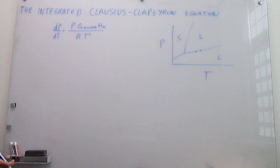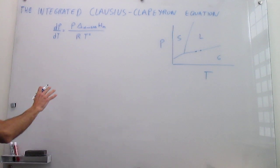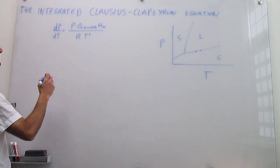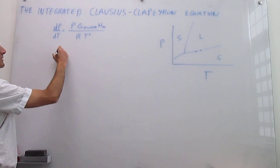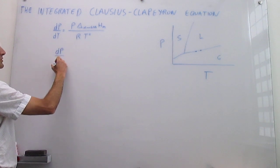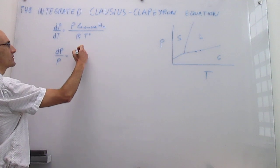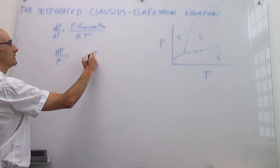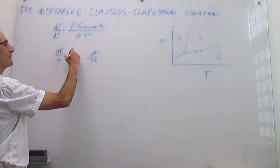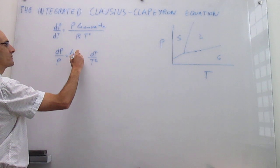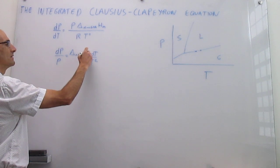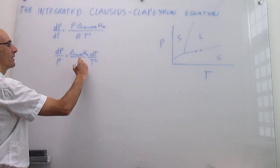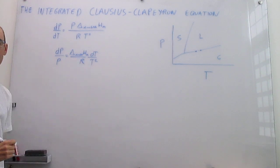We integrate via this differential Clausius-Clapeyron equation. The first step is to simply separate variables — we put pressures on the left-hand side and temperatures on the right-hand side of the equation. This gives a differential of T divided by T squared on the right, and the change in enthalpy of the phase transition divided by R on the right as well.